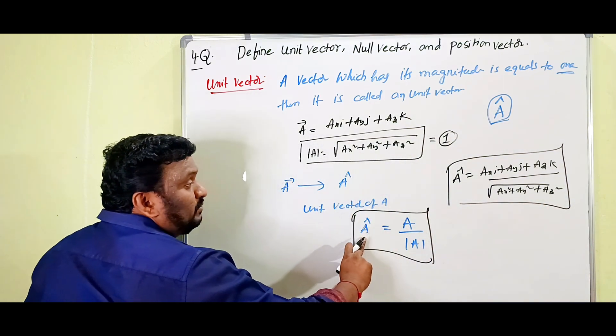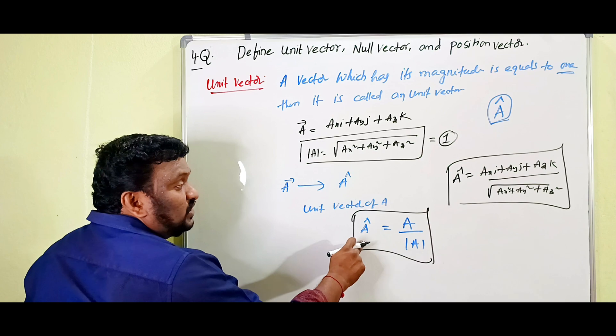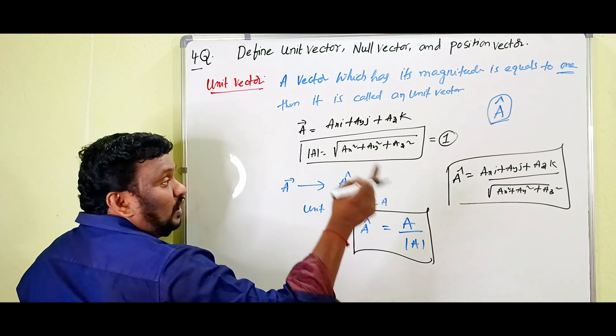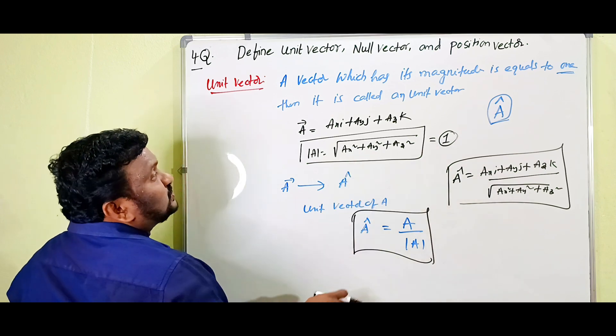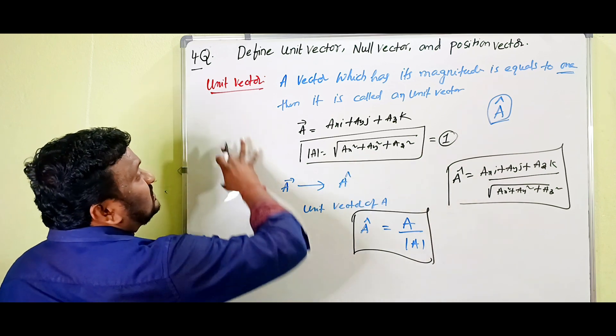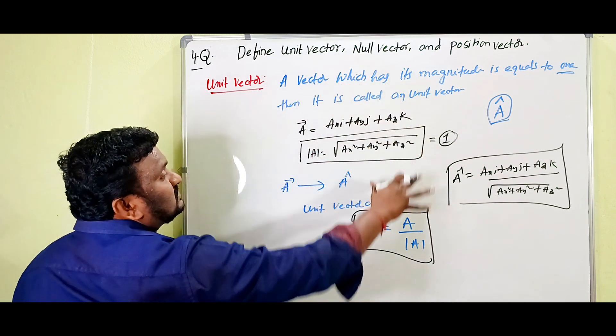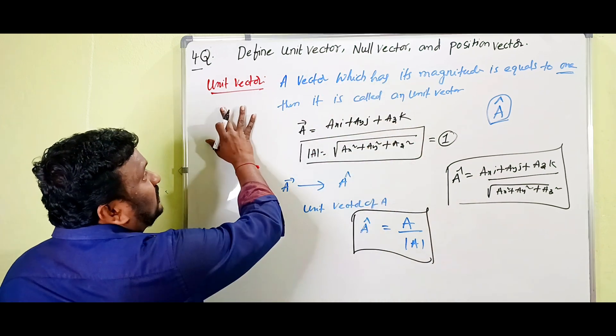So if you are asked to find a unit vector, this carries two marks. This is simply about the unit vector.